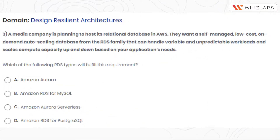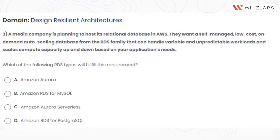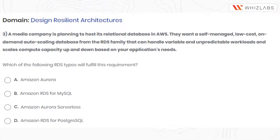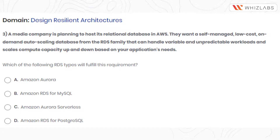Question number three. A media company is planning to host its relational database in AWS. They want a self-managed, low-cost, on-demand auto-scaling database from the RDS family that can handle variable and unpredictable workloads and scales compute capacity up and down based on the application's needs. Which of the following RDS types will fulfill this requirement?